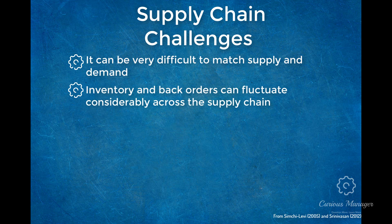Number two: inventory and backorder levels can fluctuate considerably across the supply chain. During extreme instances, the demand felt across the supply chain can vary widely, especially in supply chains that lack coordination between functions. Delays in inventory shipments and the reporting of these inventories can cause further fluctuations, resulting in more product being manufactured — sometimes even less product — than actually required. This is a major reason why lean supply chains mainly focus on reducing lead time.